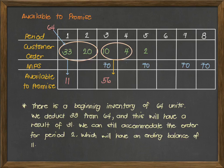For the MPS at week 5, we have 70 minus 2, giving an available to promise of 68 units. For weeks 7 and 8, since there are no customer orders, we bring down the MPS values directly. So we have 70 units to promise by week 7 and another 70 units to promise by week 8.